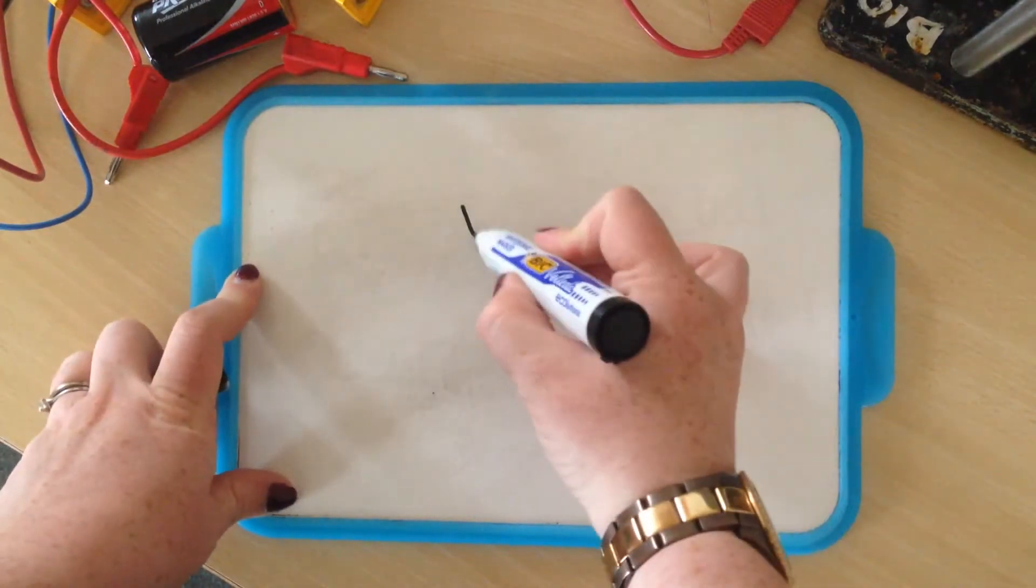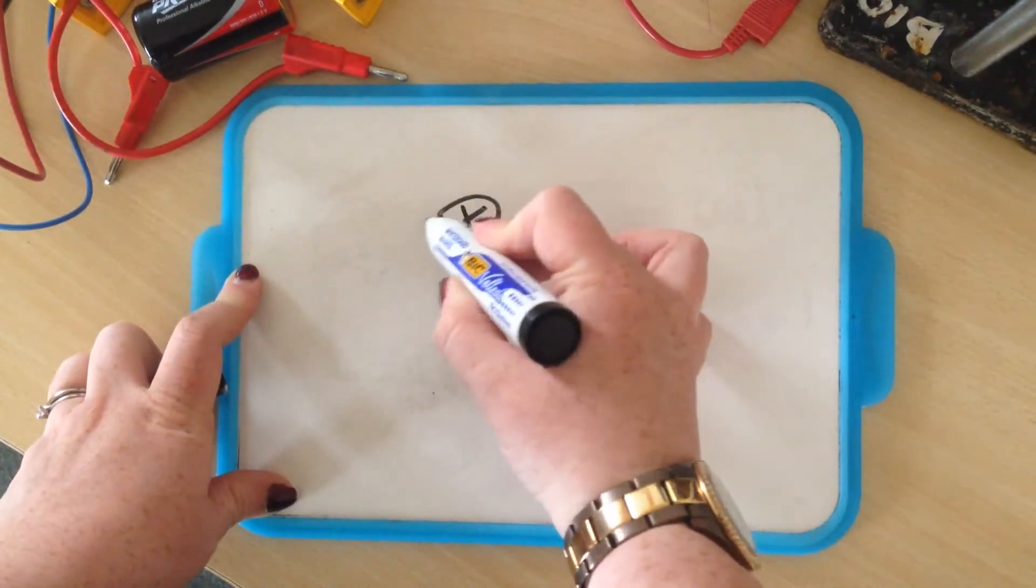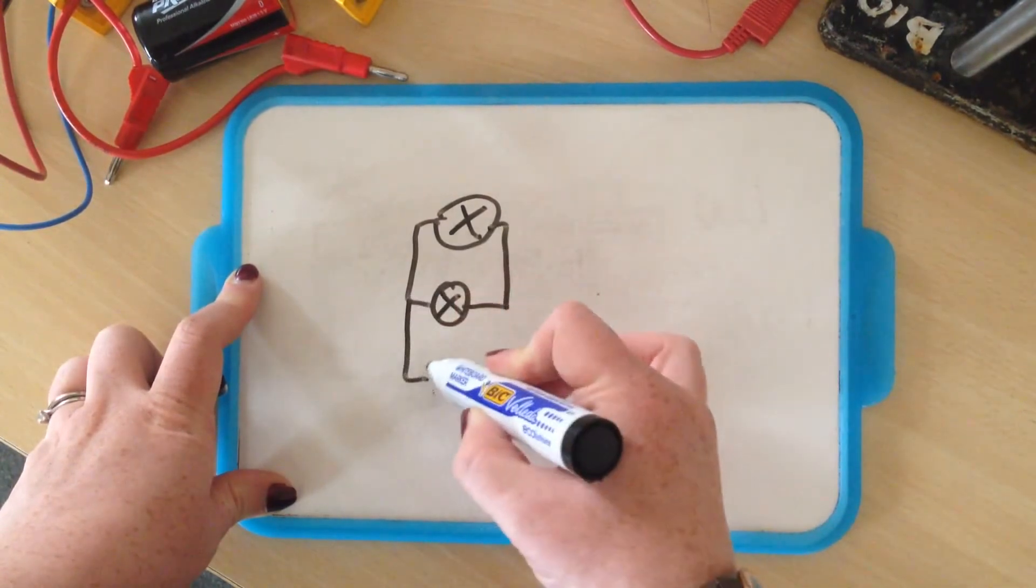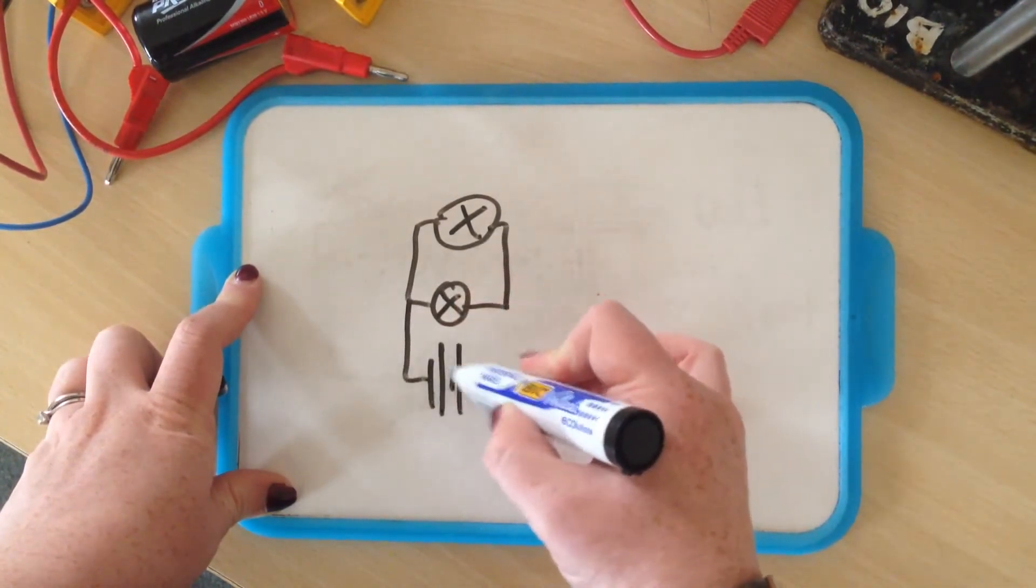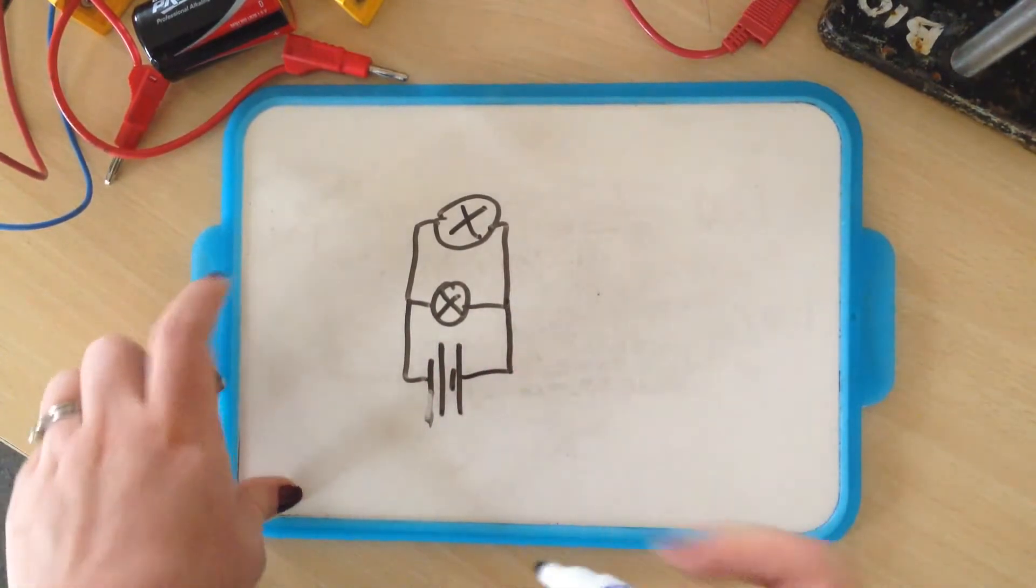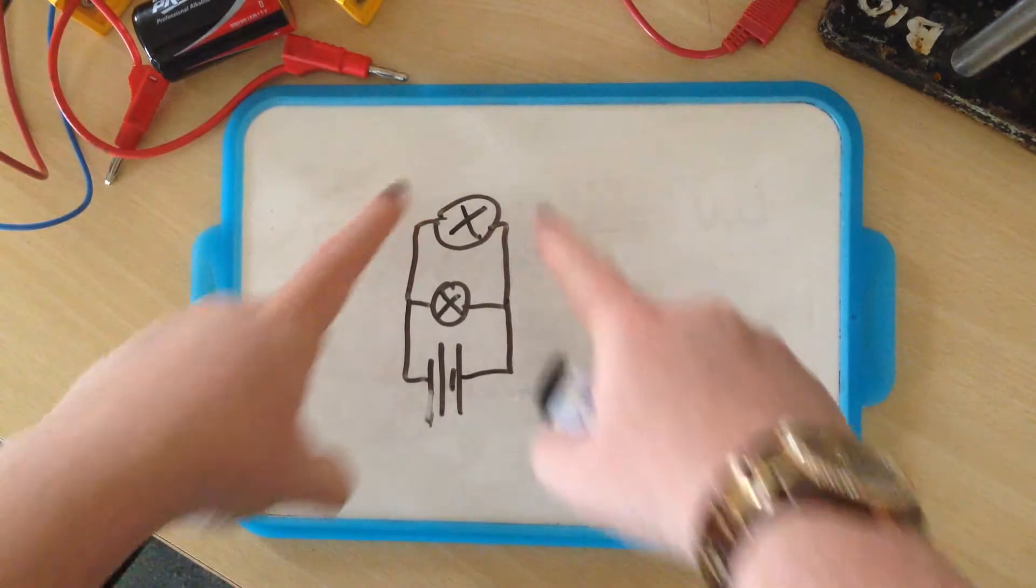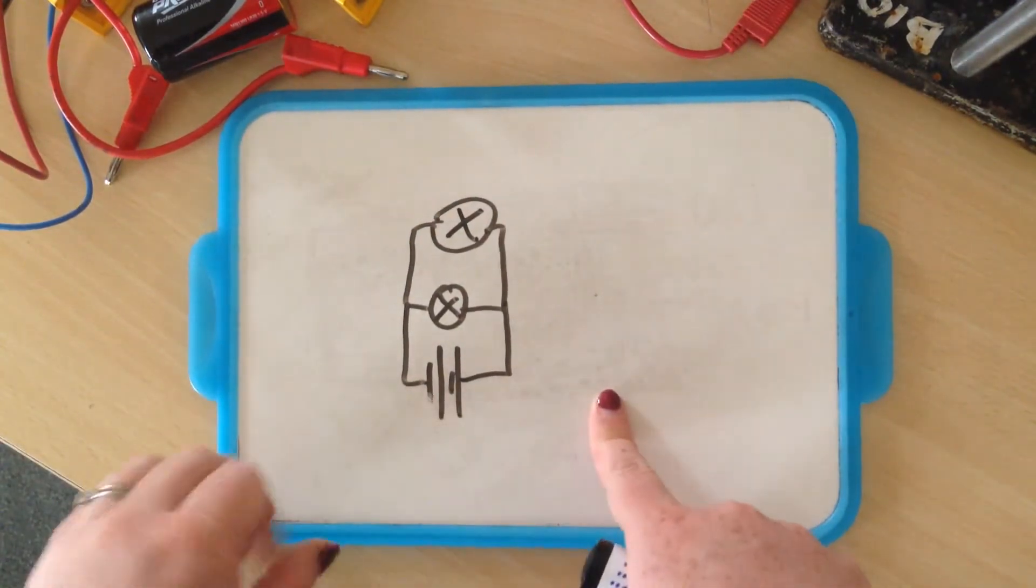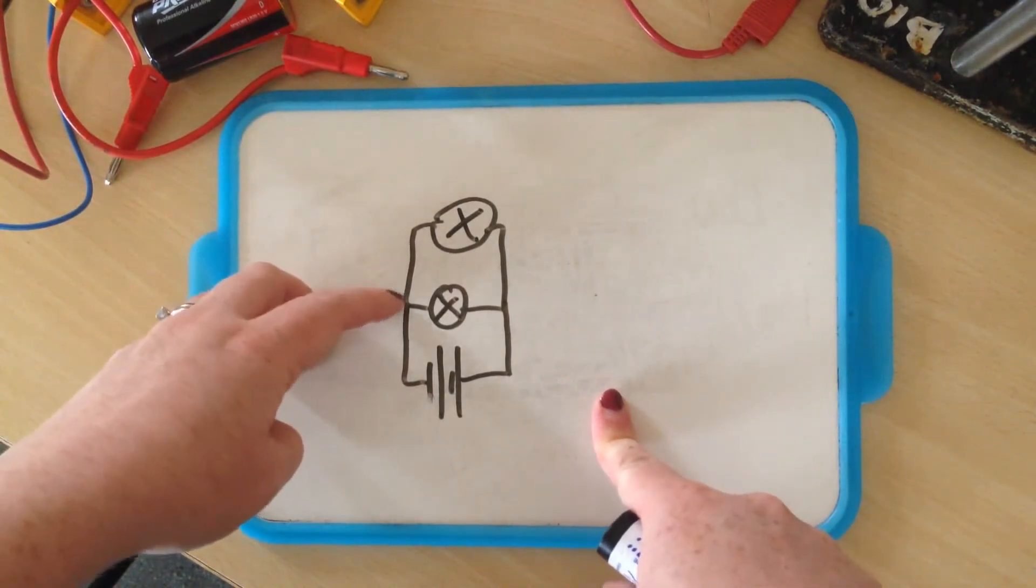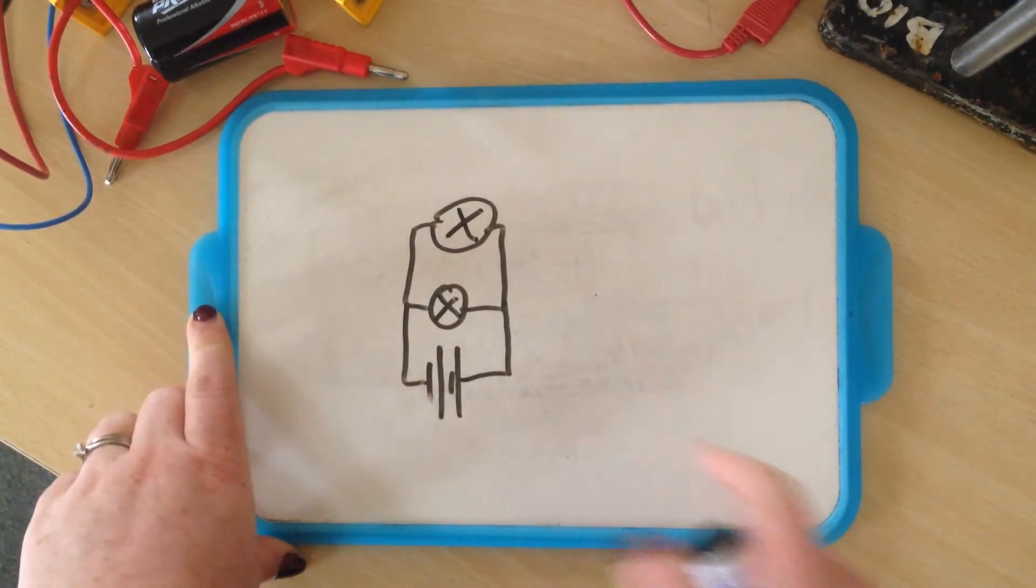The way we draw this is the symbol for a bulb and then we have another little bulb here and then that comes down to our battery. It's a bit long for a battery. Down here like this. So you can see this is a lot neater than what actually happens but it shows we have one bulb which is connected to another bulb and then this bulb is the one that was connected to the battery.